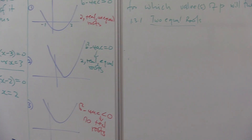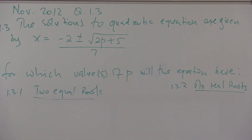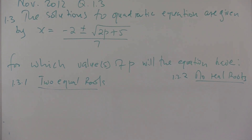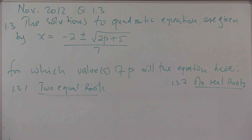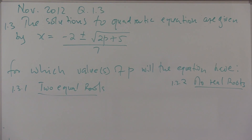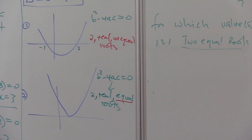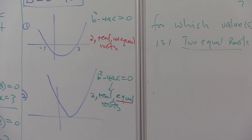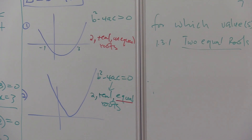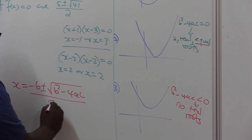In November 2012, question 1.3, the solution to a quadratic equation is given. The question says: for which value or values of p will the equation have — number 1 — two equal roots; number 2 — non-real roots. Look at the keywords. Equal roots — which diagram is that? Whenever we've got two real and equal roots, what do we know about our discriminant? Our discriminant must be equal to 0.